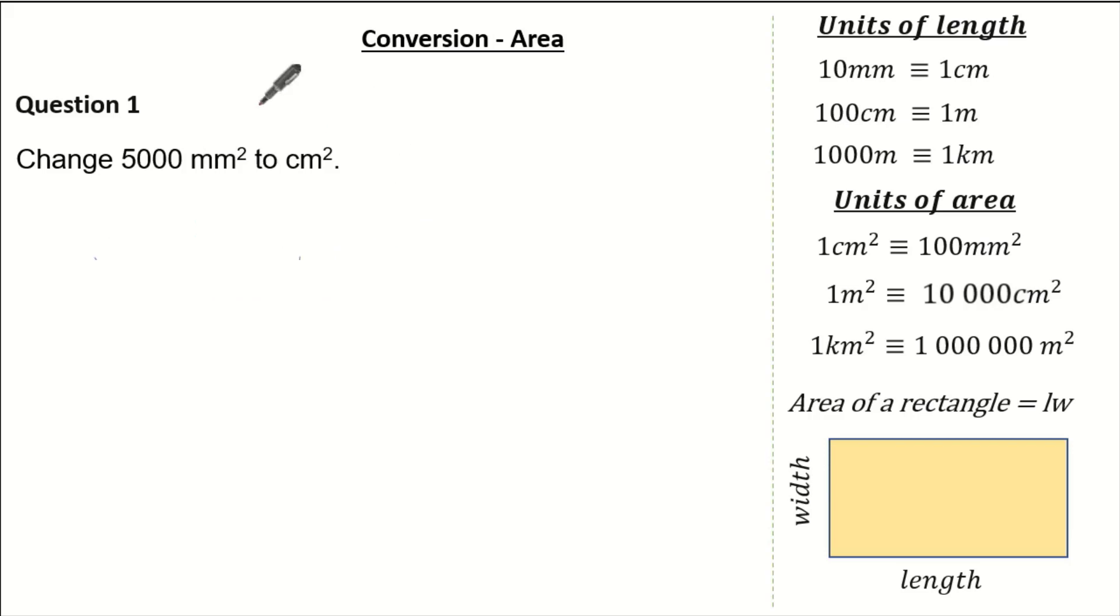Now let's have a look at 5,000mm squared and changing it to centimeters squared. Well, I know 10mm is 1cm. So therefore, changing 5,000mm squared to centimeters means I need to divide by 10 and divide by another 10, which gives me 50cm squared.